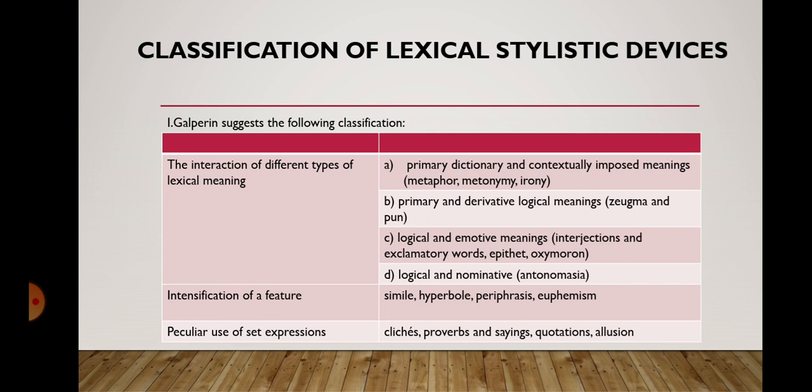The next feature is the intensification of a feature, and Galperin includes the following stylistic devices here: simile, hyperbole, periphrasis, and euphemism. And in the group of the criterion of peculiar use of set expressions, we can point out clichés, proverbs and sayings, quotations, and allusion.